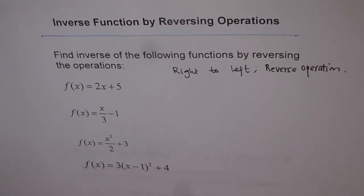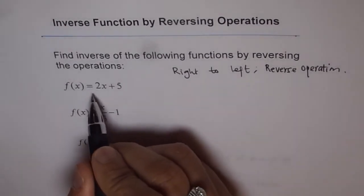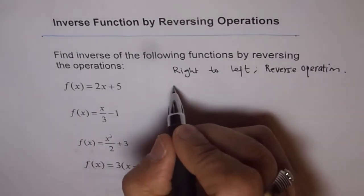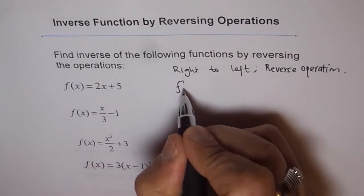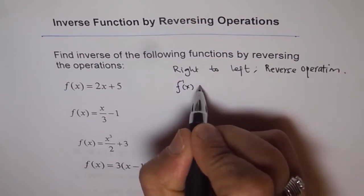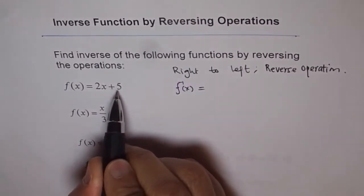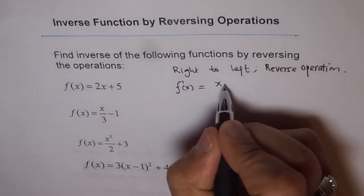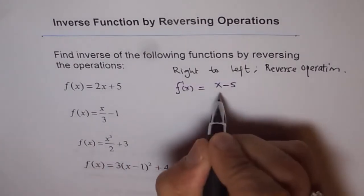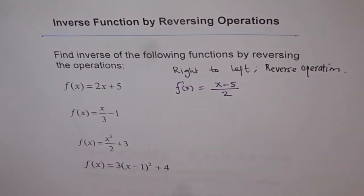So here is the first one. So if I have f of x equals to 2x plus 5, then its inverse should be equal to what we will do? Minus 5 from x. We will do x minus 5 and then divide by 2. So that is our answer.